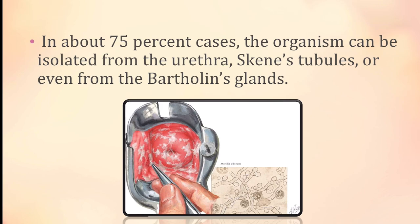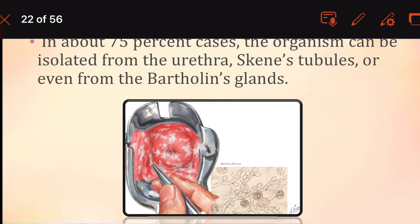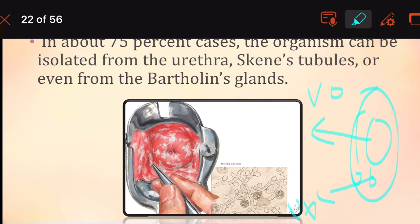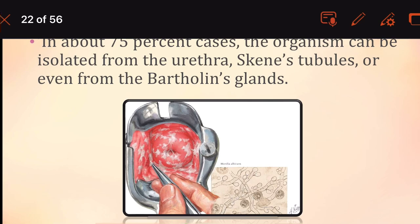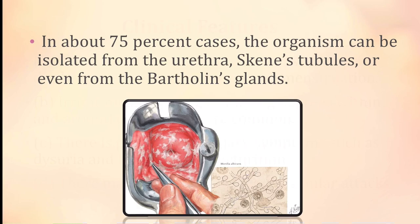In about 75% of cases, the organism can be isolated from the urethra, Skene's tubules, or even from Bartholin's glands. The vestibule contains the vaginal opening, urethral opening, Bartholin's openings at five o'clock and seven o'clock positions, and also Skene's — from all these sites the organisms can be isolated.